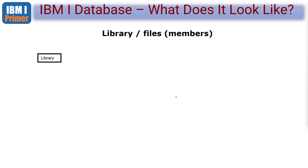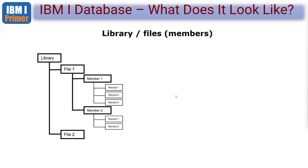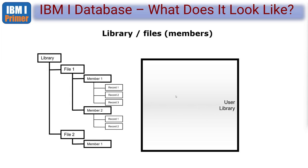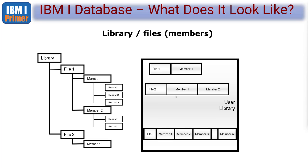Here's the big picture: we start with a library, within a library we have a file, within a file we have a member, within that member are rows of data - called records. Library contains files, files contain one or more members, and the member contains data records. We could have multiple files in a library, some with multiple members. Libraries also contain programs and other objects. That's a library - not as complicated as it sounds.